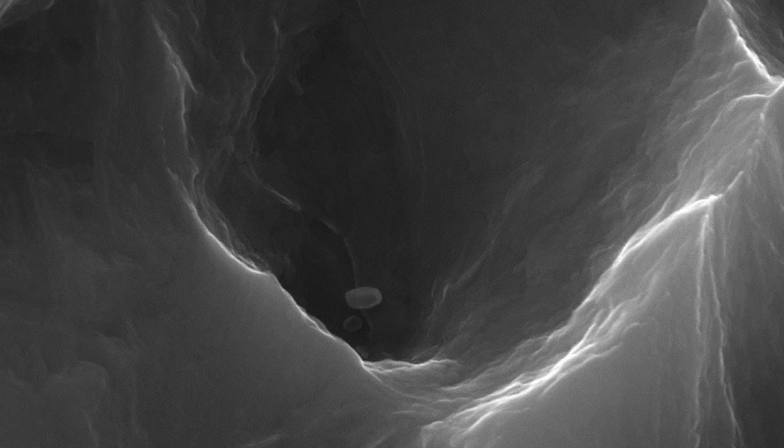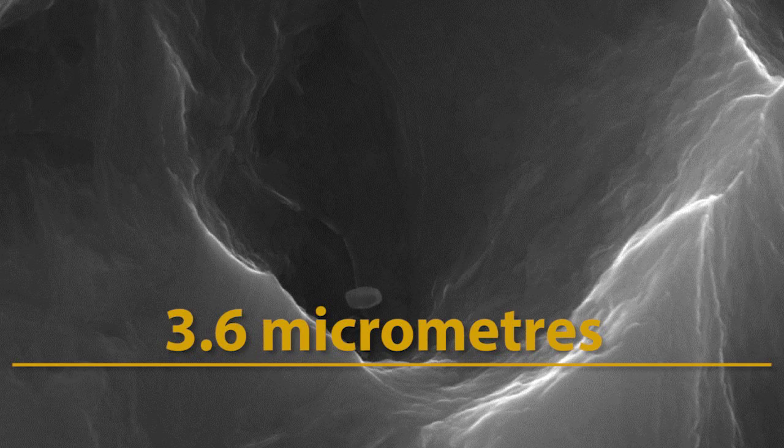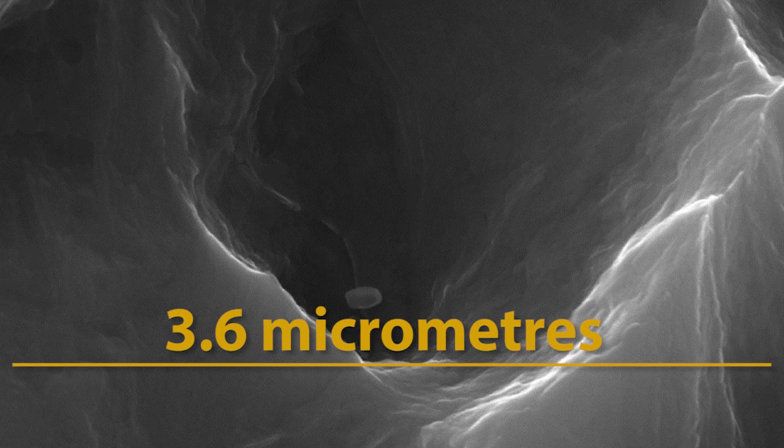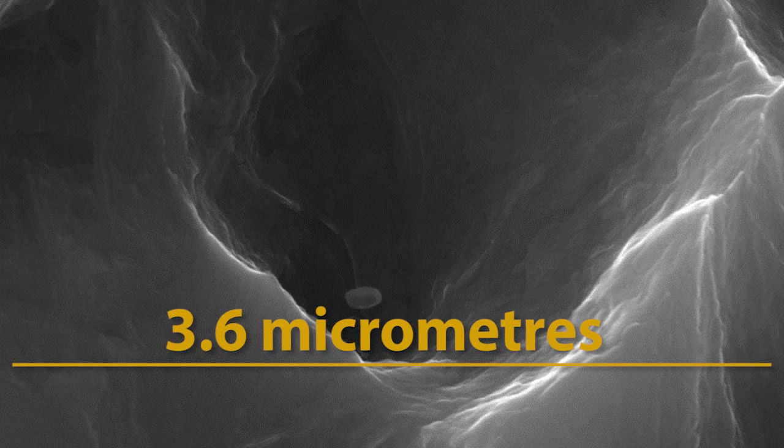When the electron microscope takes images of a fractured metal, a dimpled structure appears, indicating that the metal is flexible. The scale of this image is about 3.6 micrometers across, 25 times smaller than the thickness of a human hair.